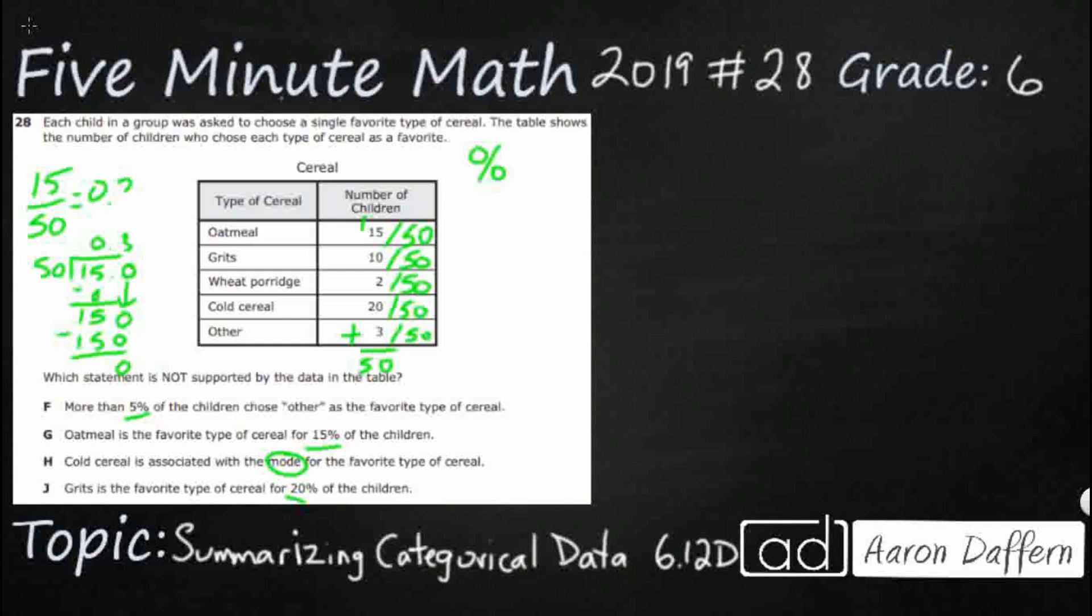And if we want to turn that into a percent, we just move it over twice, once, twice. That decimal goes over two times. So it equals 30%. So now we know that oatmeal is 30% of the response. Now we can start using that percent to answer our questions.